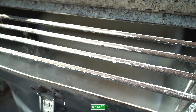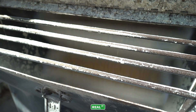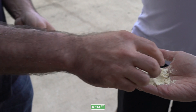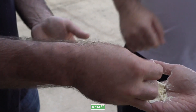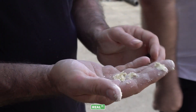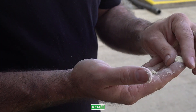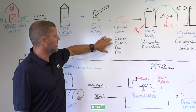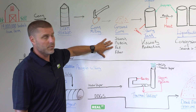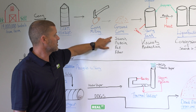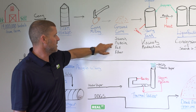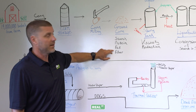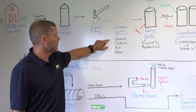The first step in processing is milling, or grinding that corn into a flour, so that it can be transferred into our ethanol production process. Ground corn contains four major components: starch, protein, fat, and fiber.